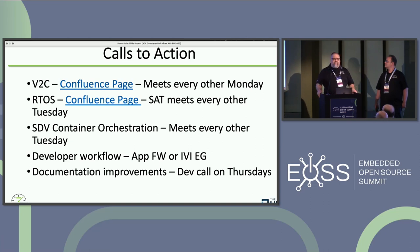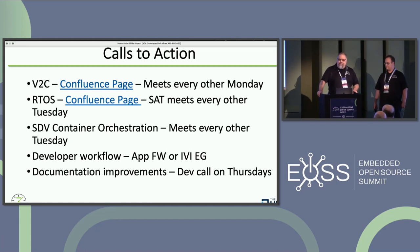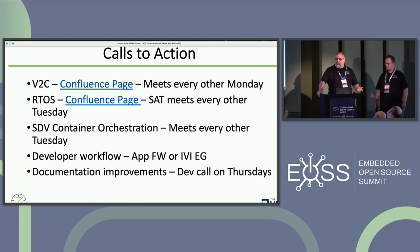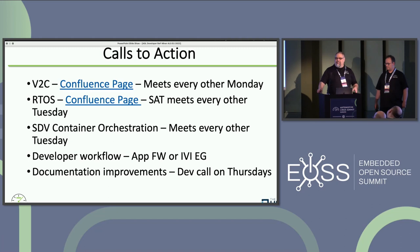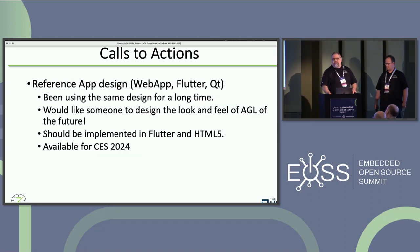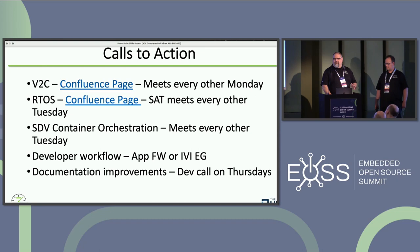The major projects we're looking at this year involve Vehicle to Cloud, RTOS interface and defining how to use an RTOS within the context of AGL, container orchestration within our software defined vehicles expert group, and developer workflow — defining how to package and deploy apps is a really big hole in our ecosystem right now. Documentation improvements is another big need, as always for any open source project.